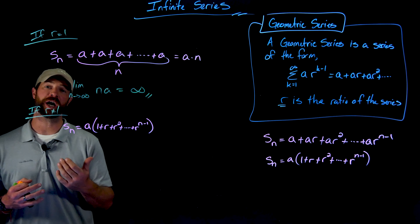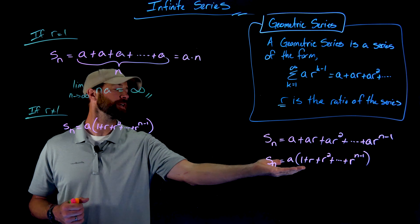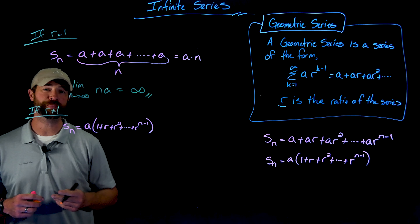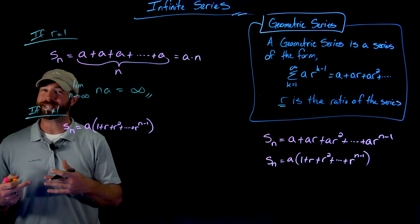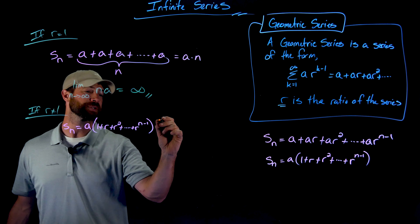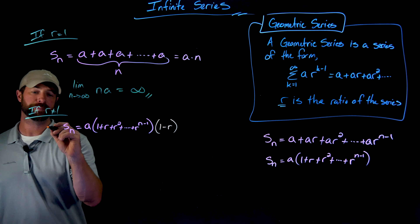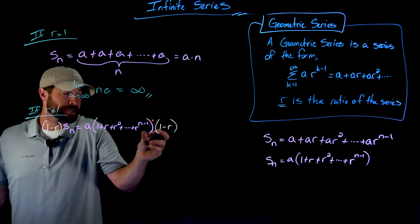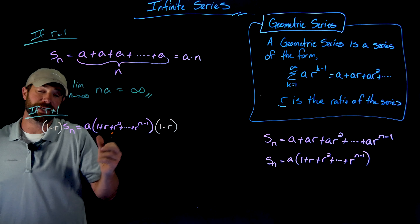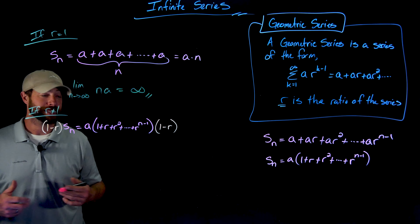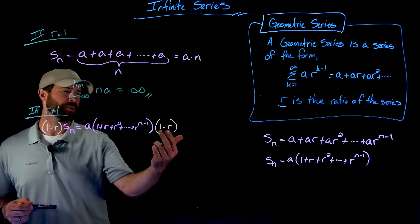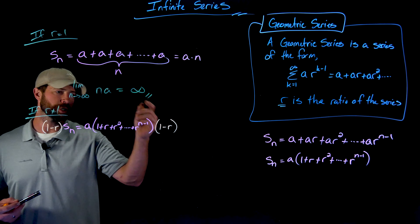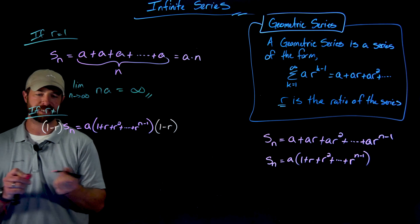Now let's figure out what happens when r is not equal to 1. Starting with the basic definition of the nth partial sum of a geometric series, we're going to do something beautifully simple: multiply both sides of this equation by 1 minus r. Then we distribute 1 minus r through the summation. It might look tough, but since 1 minus r only has two terms, I'll distribute both through individually and you'll see how beautifully this works out.